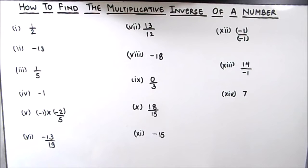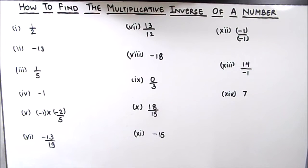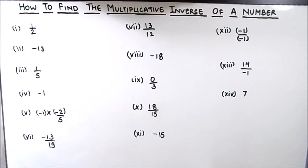Hello everyone. Today in this video we are going to learn how to find the multiplicative inverse of a number. Multiplicative inverse is also called the reciprocal of a number, and it is a number which when multiplied to the original number gives the result as 1. For finding the multiplicative inverse, we just need to inverse the number, or take the reciprocal of the number.